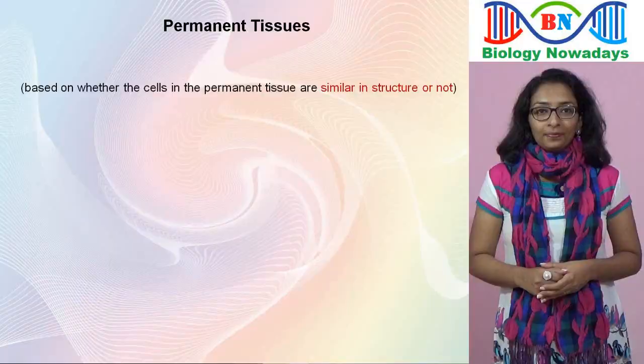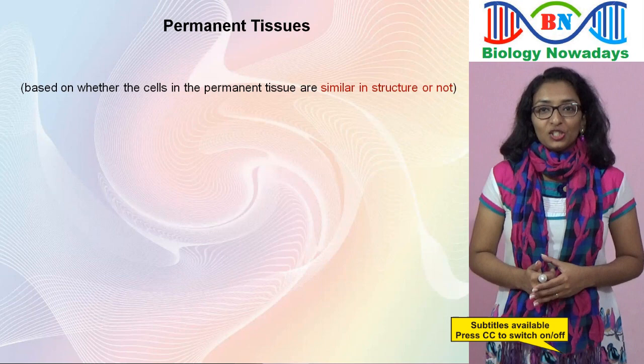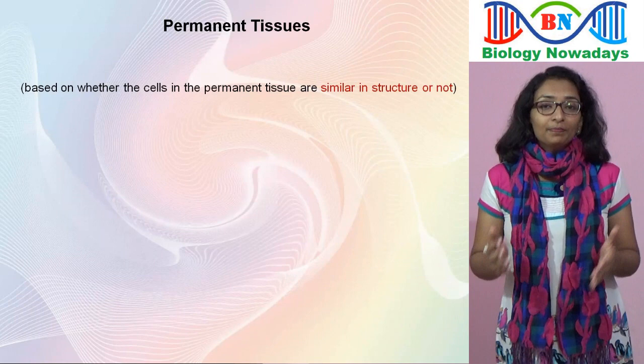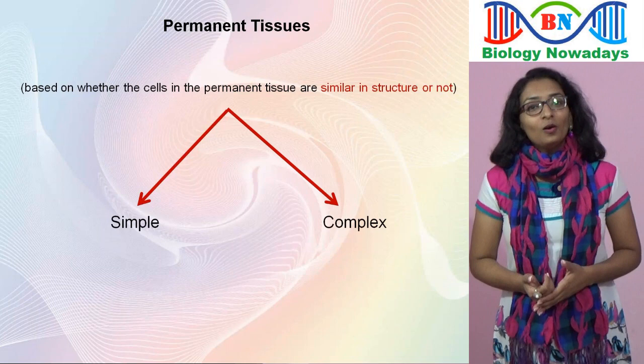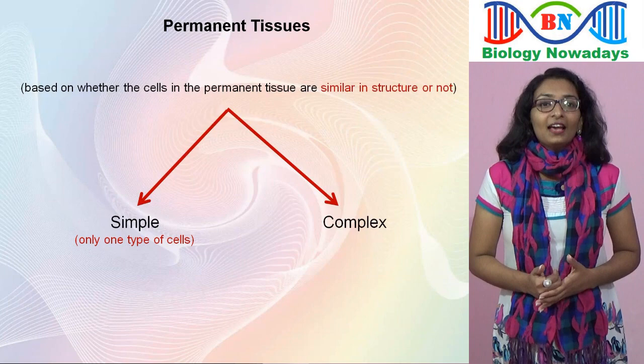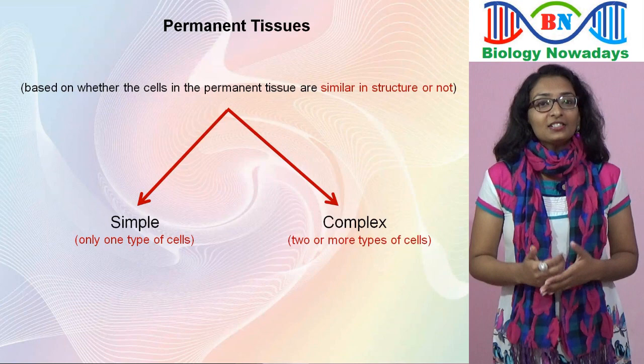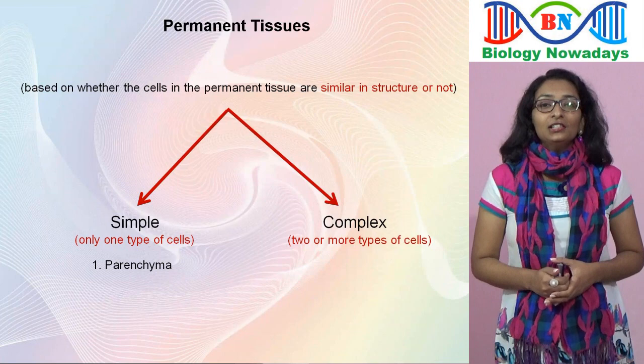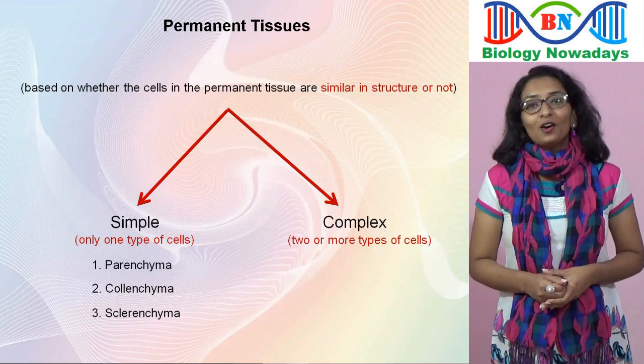As you already know, on the basis of whether the cells in the tissue are similar in structure or not, permanent tissues are divided into simple permanent tissues and complex permanent tissues. Simple tissues consist of one type of cells and complex tissues consist of two or more types of cells. In the previous lecture, we already learnt about the three kinds of simple tissues — parenchyma, colenchyma and sclerenchyma. Now let's discuss about the complex tissues in plants.